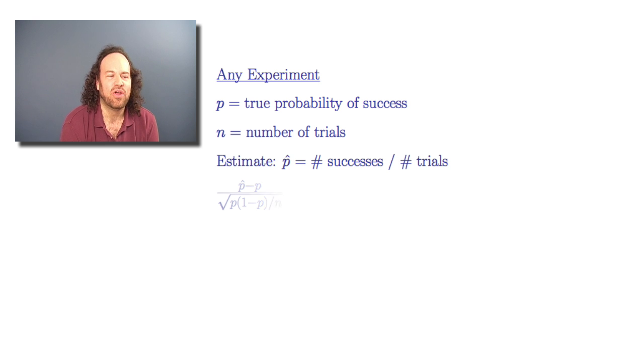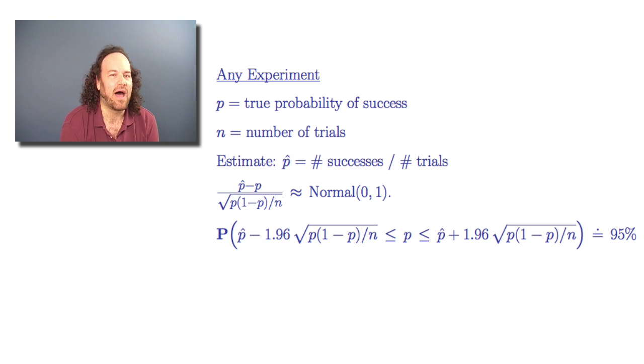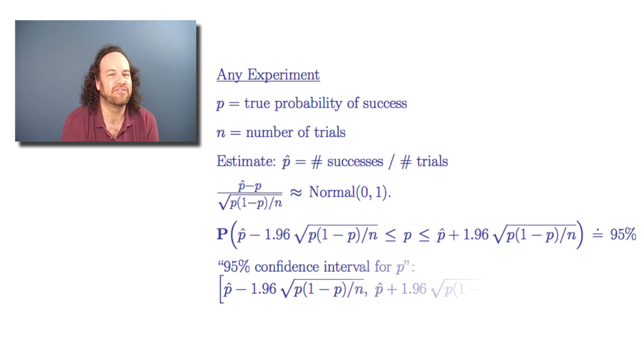And then we still know the mean and variance just like in the previous example. We can still rewrite everything and end up with this same formula that says that the probability is 95% that the true value p is between p-hat minus 1.96 times the square root of p times 1 minus p over n and p-hat plus 1.96 times the square root of p times 1 minus p over n. And this gives us, again, the 95% confidence interval.